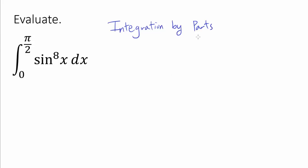Maybe if we do integration by parts, our exponent of 8 may get smaller, making it easier to anti-differentiate what's left. So let's apply integration by parts and break apart sin(x)^8 into sin(x)^7 as u and sin(x)dx as our dv, because we must be able to integrate dv, and sin(x) is very easy to anti-differentiate.